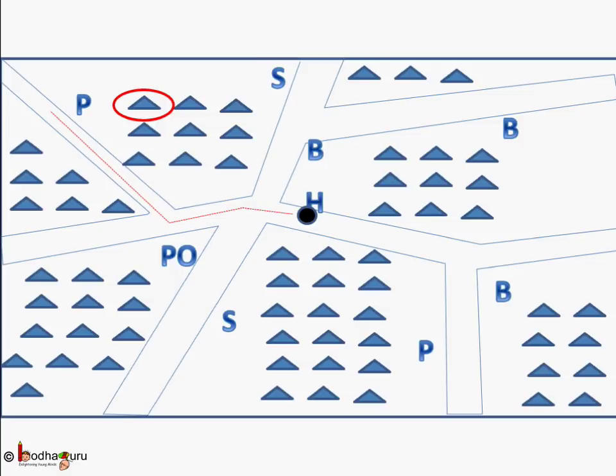Post office is in the southwest of the hospital. We can get a good idea of the town from this map. The house where he is staying is in the east of the park. He can easily find his way using the map if he knows which direction is north.